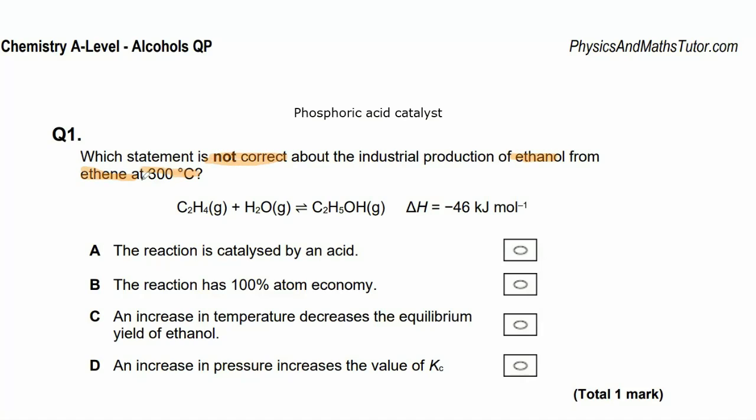Question 1. Which statement is not correct about the industrial production of ethanol from ethene at 300 degrees? Is the reaction catalyzed by an acid? So we're looking at the one that's not correct. Yeah, the reaction is catalyzed by an acid. It's catalyzed by phosphoric acid.